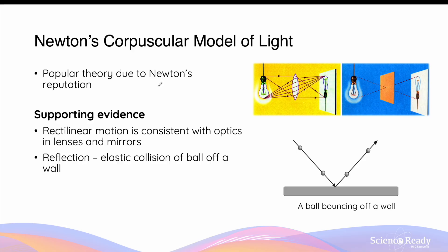The rectilinear motion of light corpuscles explains why we see upright, inverted, enlarged, or diminished images in various types of lenses and mirrors. The model describes that reflection of light corpuscles behaves in the same way as an elastic collision between a ball and a wall, where the angle of incidence equals the angle of reflection.